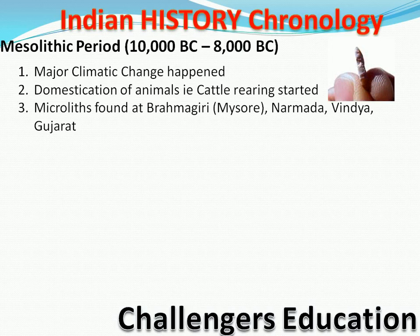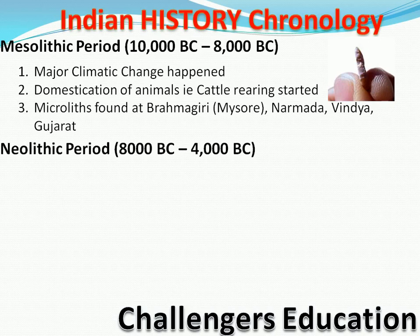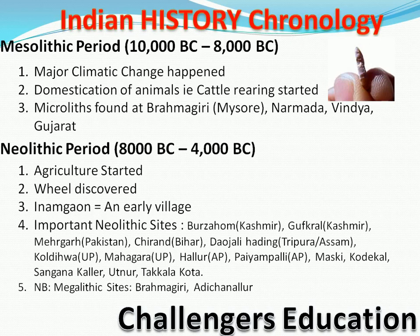Agle period ka naam hai Neolithic period — 8,000 BC to 4,000 BC. Neolithic period mein humans ki achievements thi ki humne agriculture start kar li thi, wheel discover kar liya tha. Ek purana gaon hai — Inamgaon — yeh bahut purana village hai. Yeh sab hum detail mein padhenge; filhal yeh ek chronology hai ki what we are going to study.